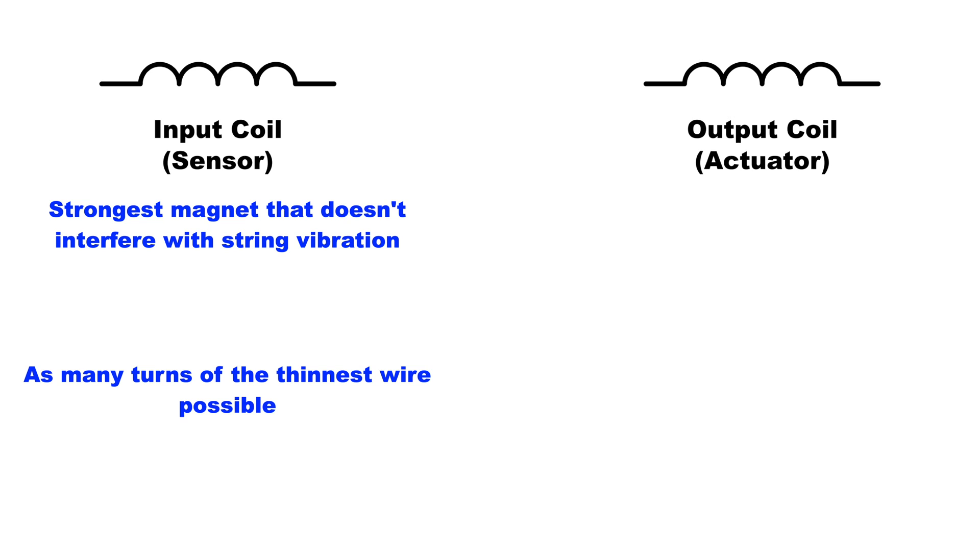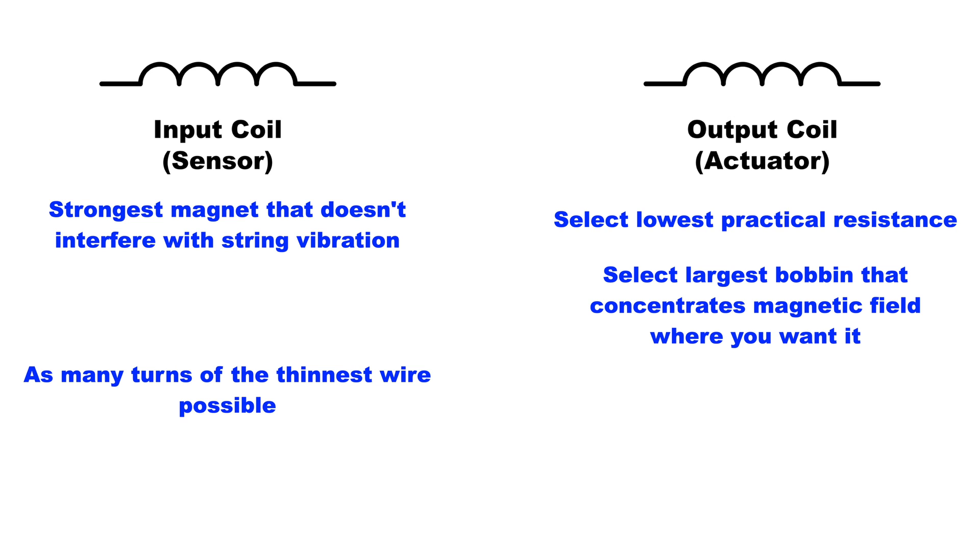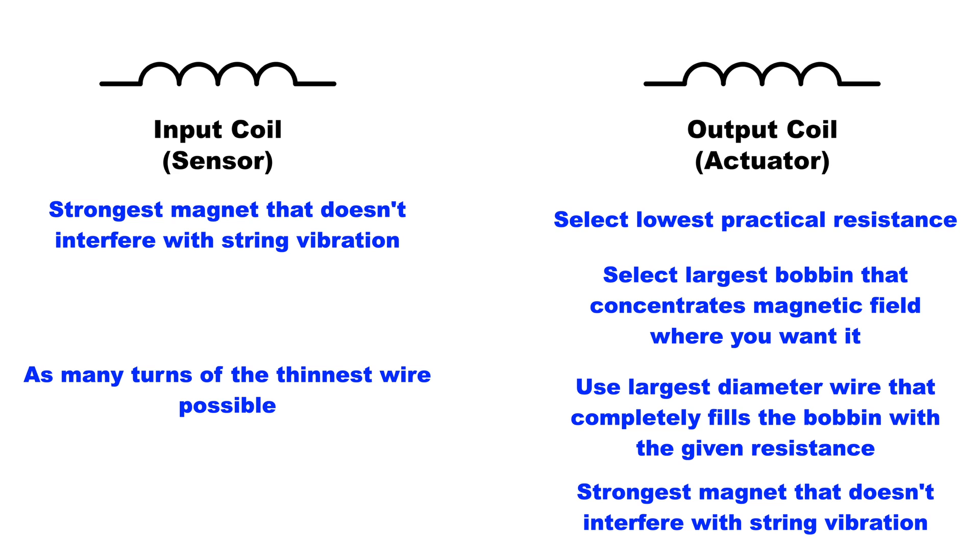And so just to recap, here's what you want to do for the output coil. You want to select a coil of the lowest resistance that you're able to work with practically, maybe 4, 8, or 16 ohms. And you also want to select the largest bobbin that is at least small enough to kind of concentrate the magnetic field in the area where you want it. And then you want to find a wire diameter so that a length of the wire with the desired resistance also just completely fills up the bobbin. And then again you are going to want the strongest magnet that you can get in there that doesn't interfere with the vibration of the string.